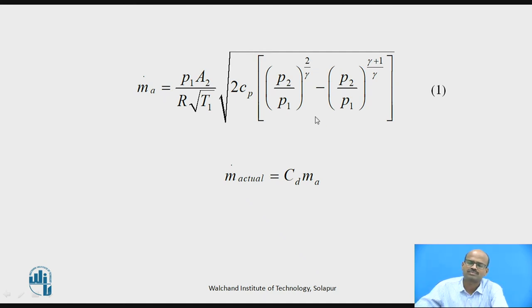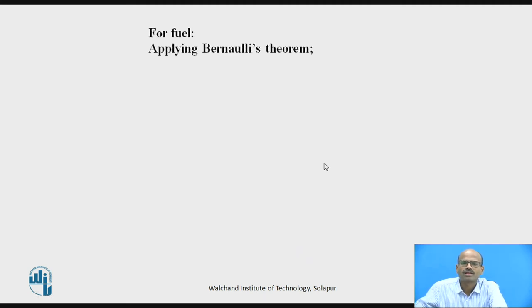Now this is the theoretical relation. Whenever any fluid flows through tube or pipe, then its coefficient of discharge is to be considered because theoretical flow cannot be equal to practical flow. Practical flow depends upon the material used for that pipe or tube and its friction factor. The manufacturer is supplying you this coefficient of discharge. That is why the actual mass flow rate of air is the multiplication of Cd into Ma. So you can calculate this one.